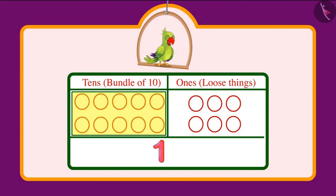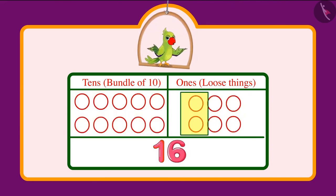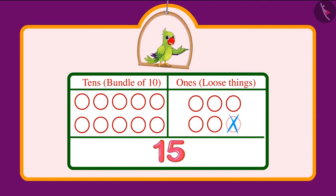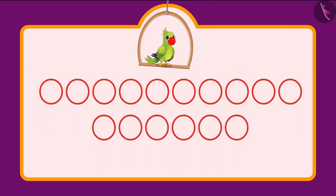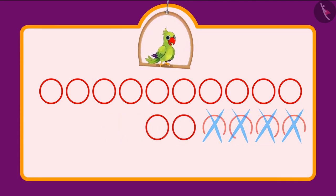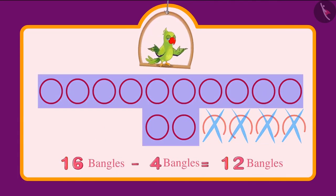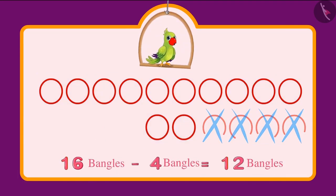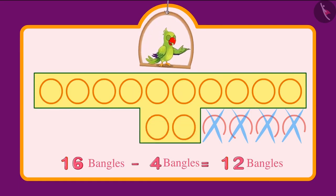16 consists of 1 tenth and 6 ones. And when we subtract 1 unit from 16, then we are left with 1 tenth and 5 ones — that is 15 bangles. This means that if you subtract 4 bangles from 16 bangles, then we will get 12 bangles. So Chotu has a group of 10 and 2 more bangles, that is 12 bangles in total.